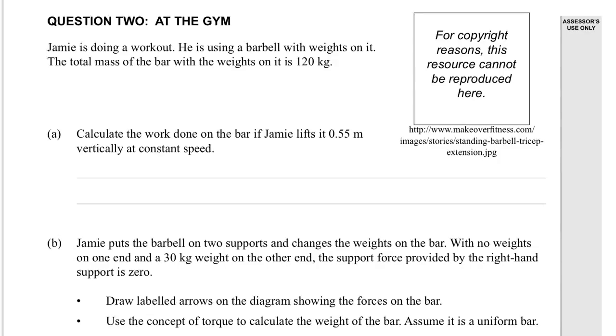2014 level 2 mechanics question 2. At the gym, Jamie's doing a workout using a barbell with weights on it. The total mass of the bar with weights is 120 kg. Calculate the work done on the bar if Jamie lifts it 0.55 metres vertically at a constant speed.